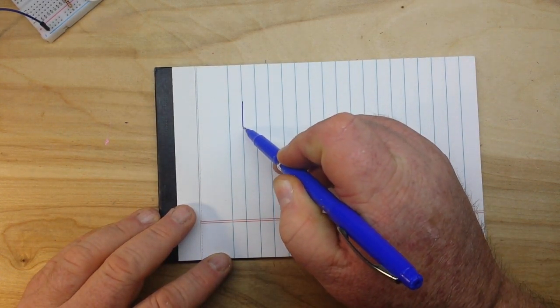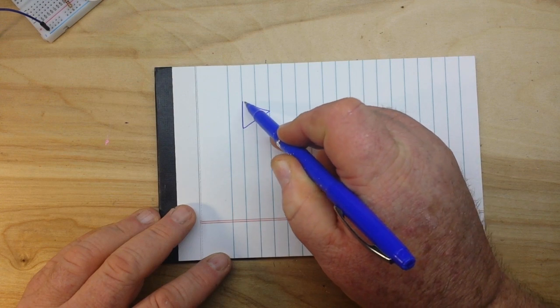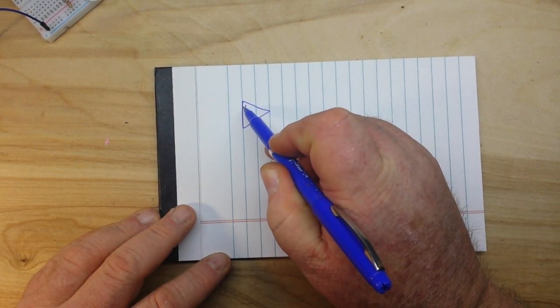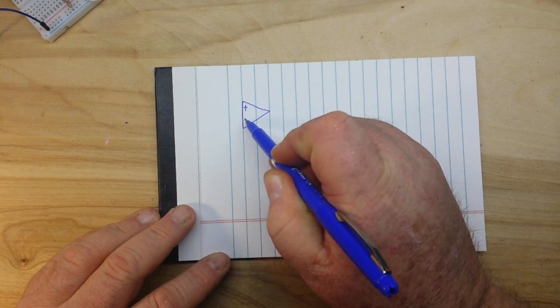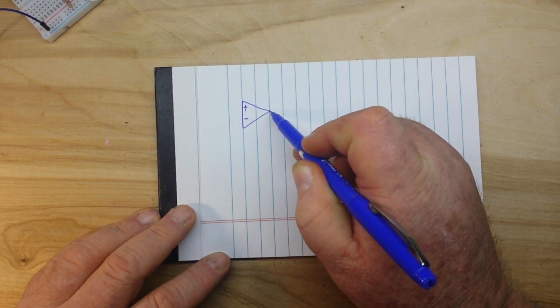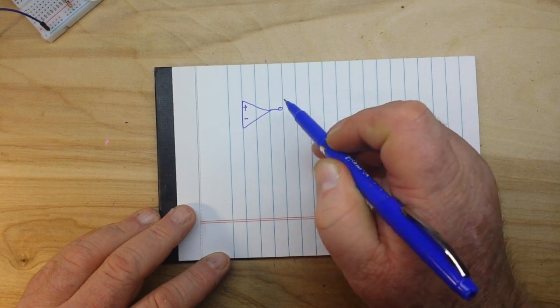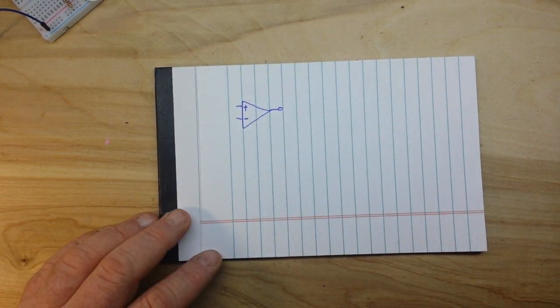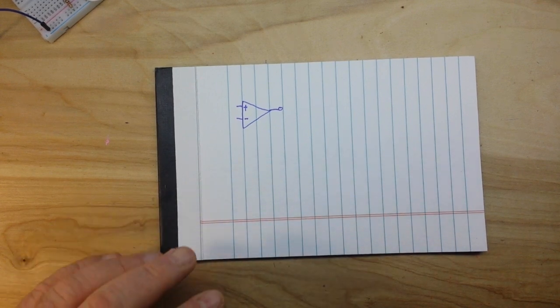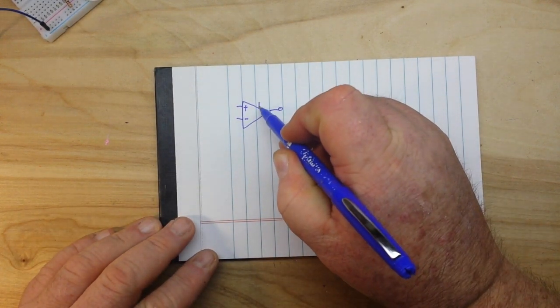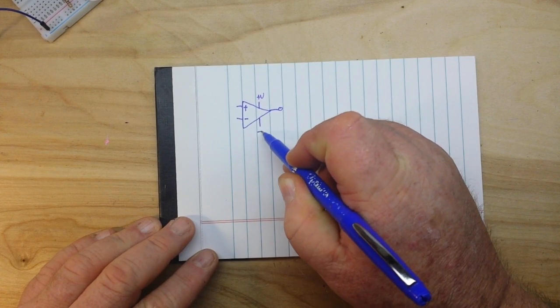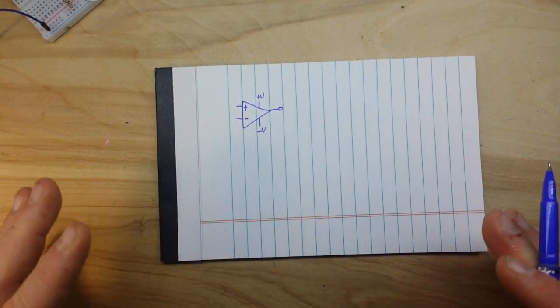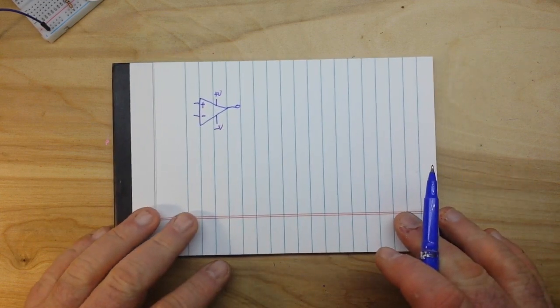So just a quick refresher on an op-amp. The symbol is the triangle. It has a non-inverting input, the inverting input, and the output - that simple. Now we also have a plus V and a minus V, no actual ground connection.